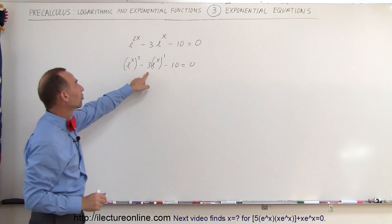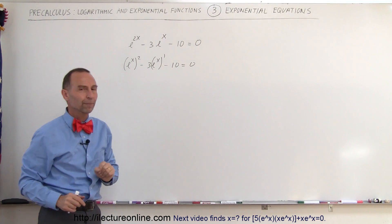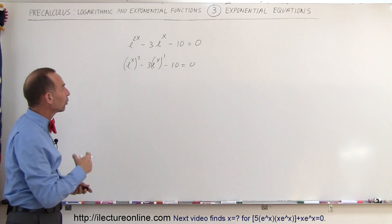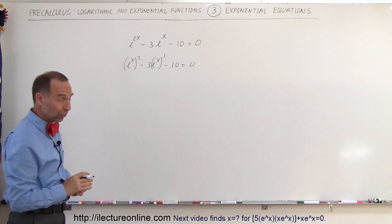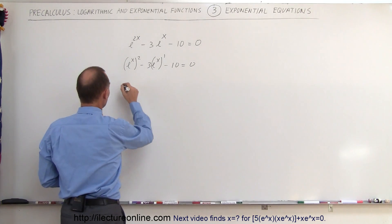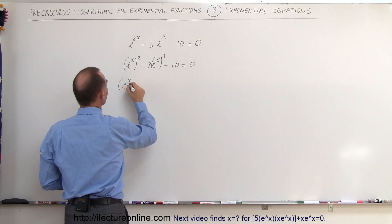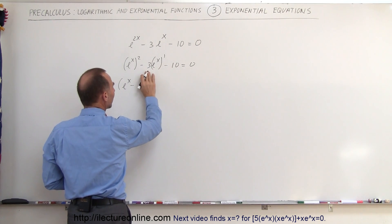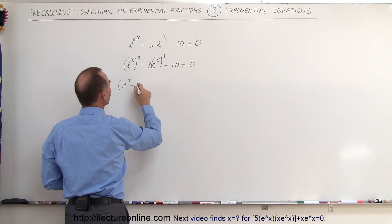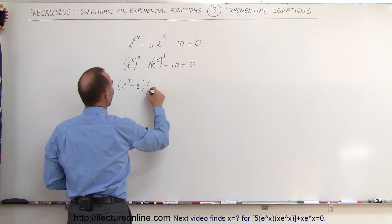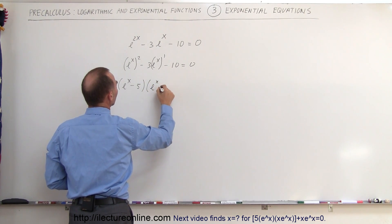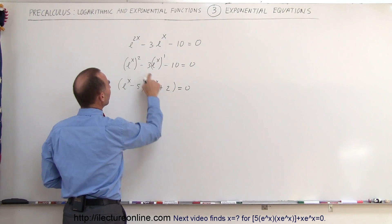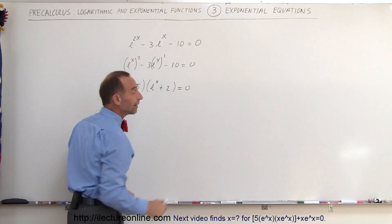So we could say u squared minus 3 times u minus 10 equals 0. That means we can solve that either by factoring or by the quadratic formula. I think in this case we could probably factor it, so this can be written as e to the x minus—let's see here, the product is minus 10 and when you add it you get minus 3, that means minus 5—times e to the x plus 2. I believe that works. Let's see, when you add those up you get minus 3, when you multiply get minus 10. That is it.